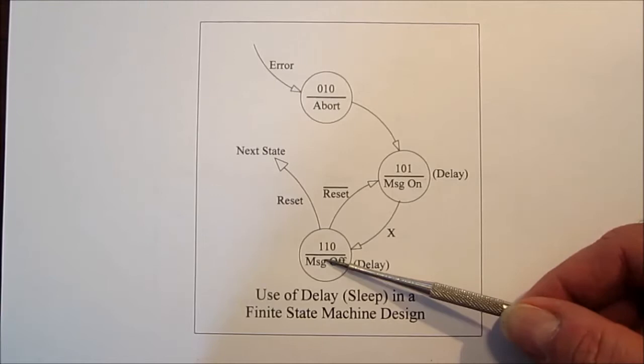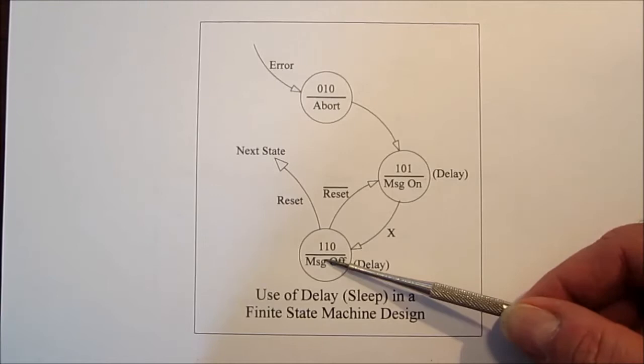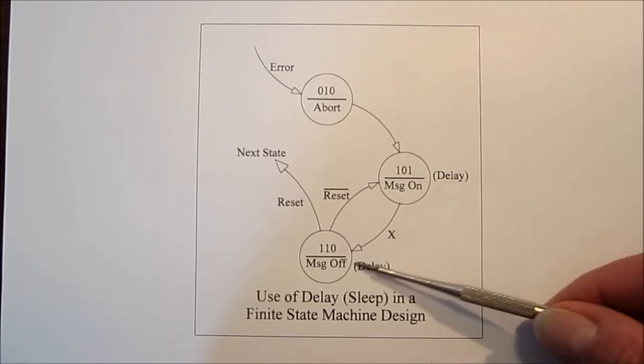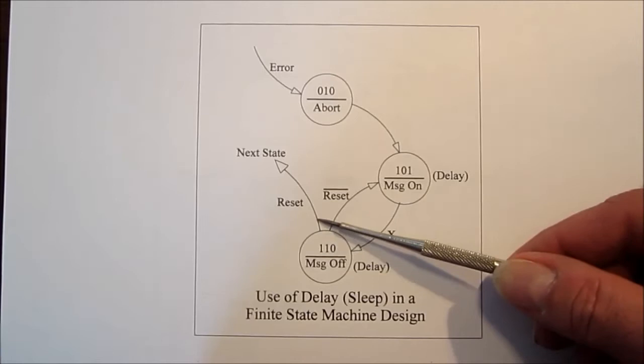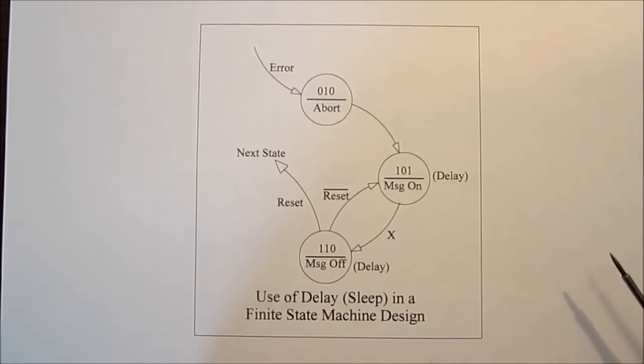So we enter this state and we've turned the message on and then we delay and then we come down here and we turn the message off and we delay and we keep going flashing this message off and on waiting for them to reset the system. If they haven't reset the system we stay going between these two states here flashing the message off and on, but then when they reset the system we exit this in a state where the message is off and we go on to do something else.